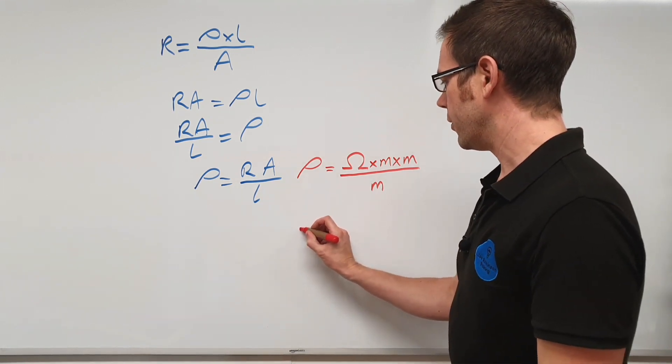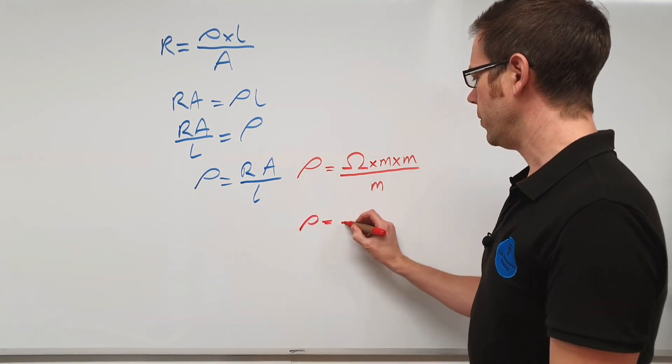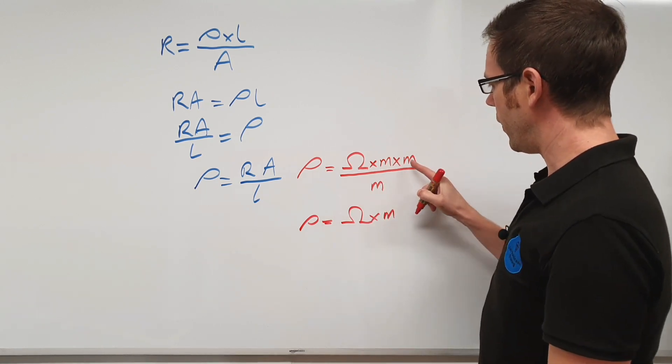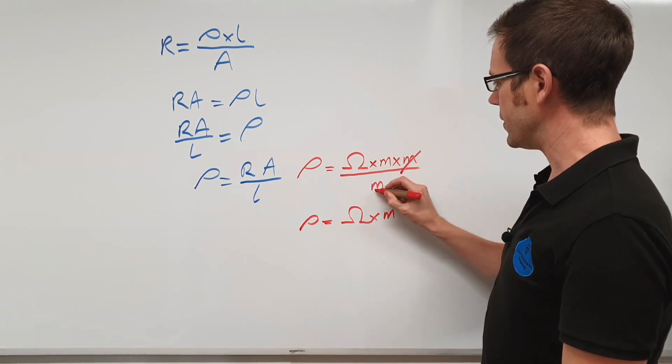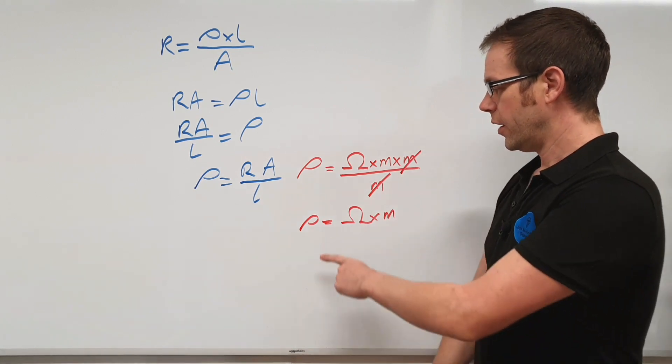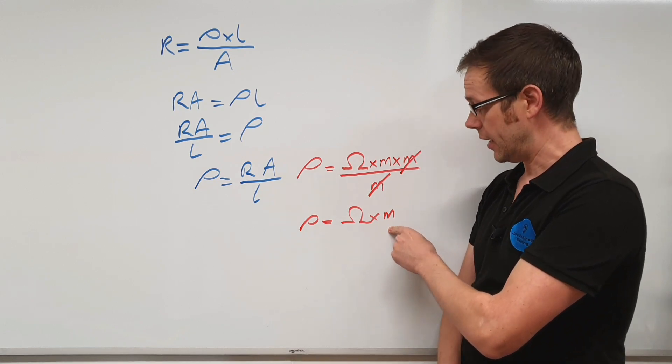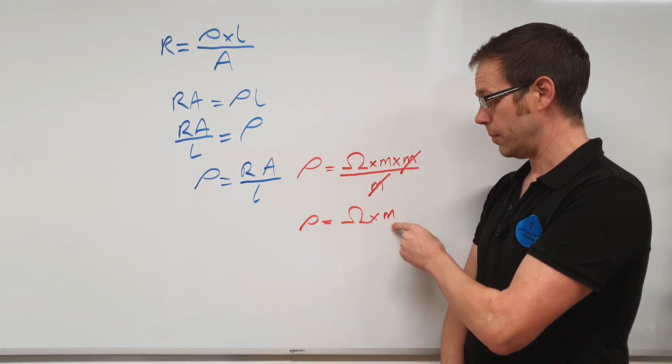So what that leaves us with is rho is equal to omega times by this first m, but that m and that m have very simply disappeared. So can you see that actually what we're left with here now is the unit that we measure resistivity in, which is ohms times meters.